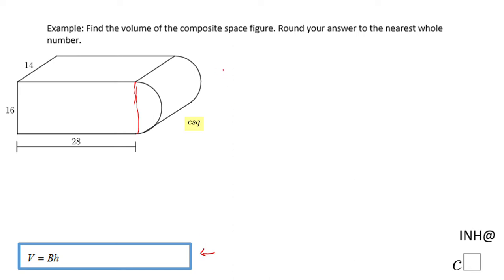Or we can use this formula you see down here: volume equals B times H. B is the area of the base. In this case, the base is a composite shape.